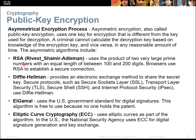Asymmetric encryption includes RSA, or Rivest-Shamir-Adleman, which uses between 100 and 200 digits. Then we have Diffie-Hellman, which is used by the routing protocol OSPF, and also used for SSL (Secure Socket Layer), TLS (Transport Layer Security), SSH (Secure Shell), and also IPsec. It's probably the most common one used out there.